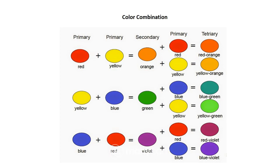Then, if you want to make a tertiary color, we have to mix the secondary and the primary. Orange plus red equals red-orange. Orange plus yellow equals yellow-orange. Green plus blue equals blue-green. Green plus yellow equals yellow-green. Violet plus red equals red-violet. Violet plus blue equals blue-violet.